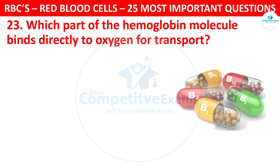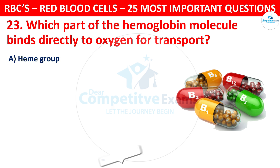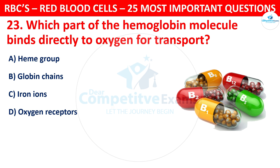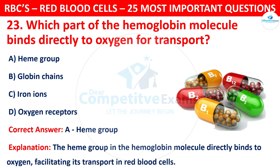Question 23. Which part of the hemoglobin molecule binds directly to oxygen for transport? The options are: Heme group, Globin chains, Iron ions, or Oxygen receptors. The correct answer is A, that is Heme group. The heme group in the hemoglobin molecule directly binds to oxygen, facilitating its transport in red blood cells.